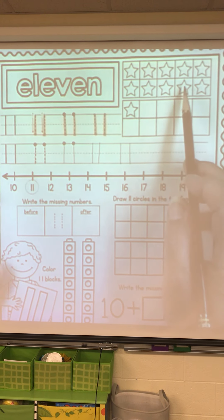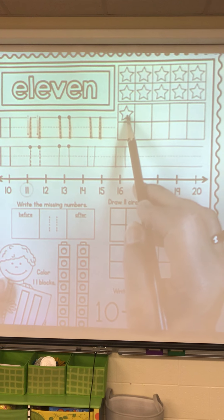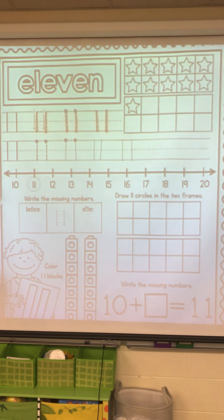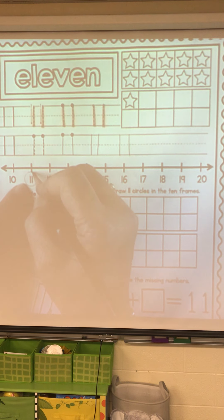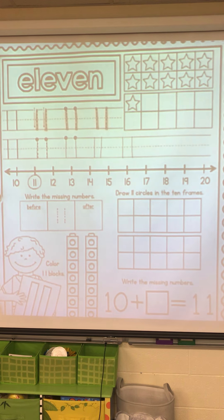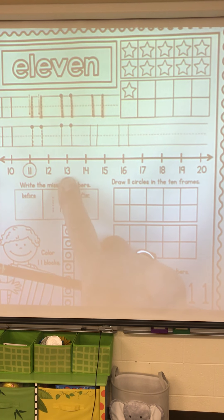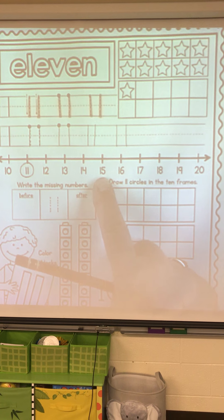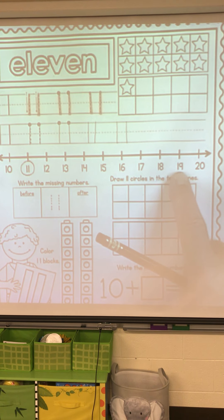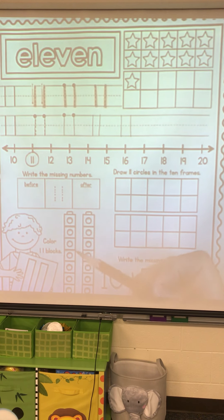We have 10 in that full 10-frame and one more. 10 and one is 11. Let's circle the 11 on the number line. Everybody count: 10, 11, 12, 13, 14, 15, 16, 17, 18, 19, 20. And we circled our 11.